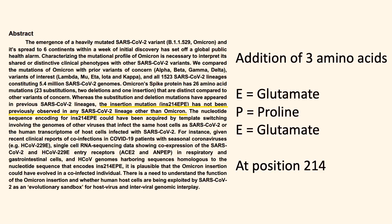This mutation is called INS214-EPE. It is an addition of three amino acids — glutamate, proline, and glutamate — in the 214 position of the spike protein.